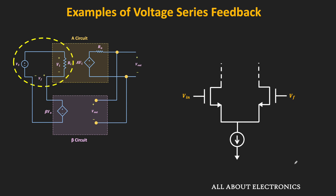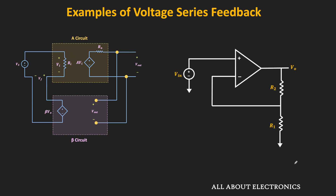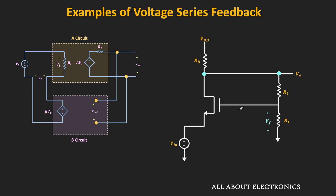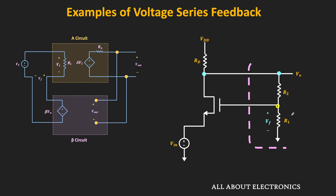The non-inverting configuration of the op-amp is one example of the voltage series feedback: using a voltage divider, the output voltage is sampled, and the op-amp performs the series mixing on the input side. Another example uses a MOSFET-based circuit: using a voltage divider, the voltage signal is sampled and connected back to the gate terminal of the MOSFET, while the input signal is applied to the source terminal. So the MOSFET performs the series mixing, with Vgs = Vf − Vin, acting as a voltage subtractor.